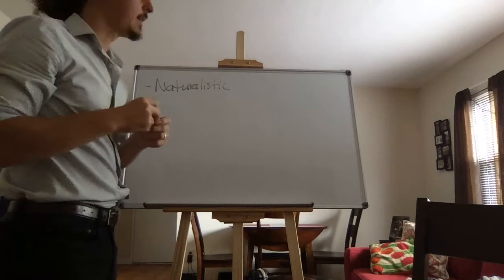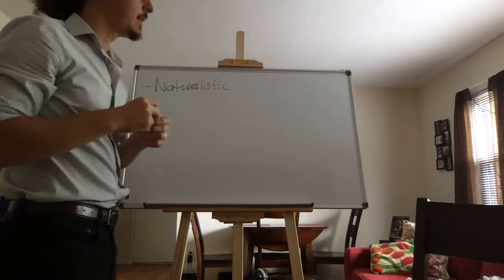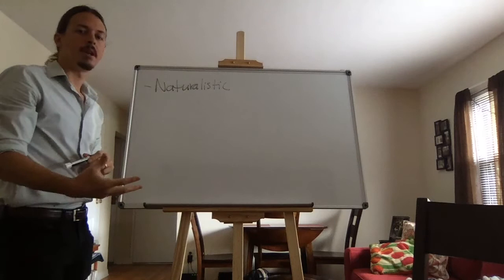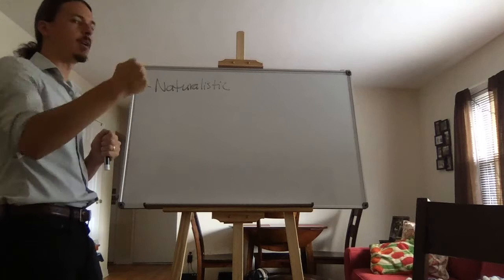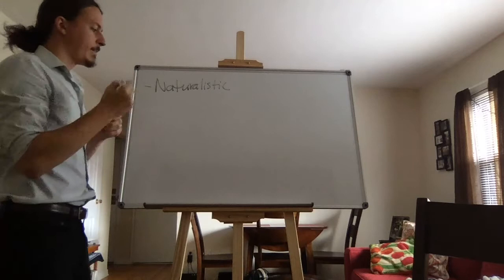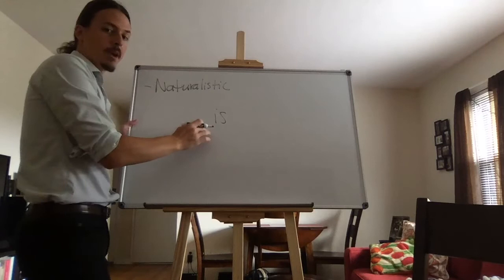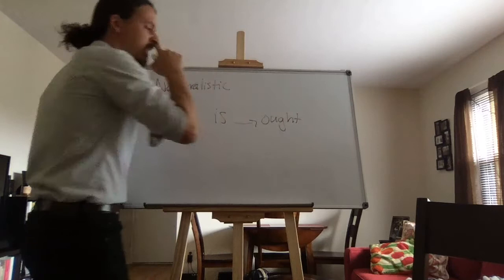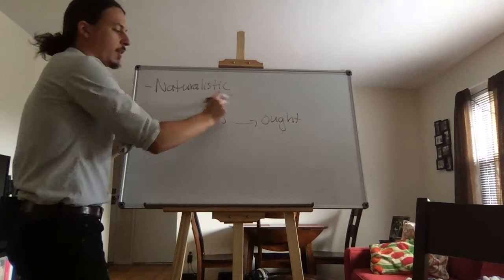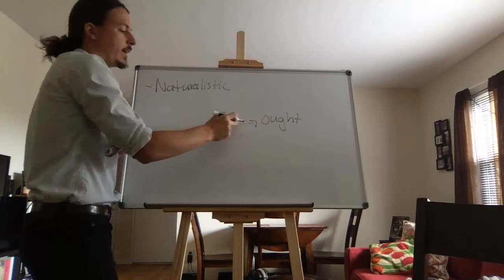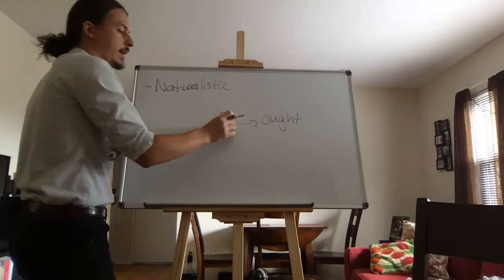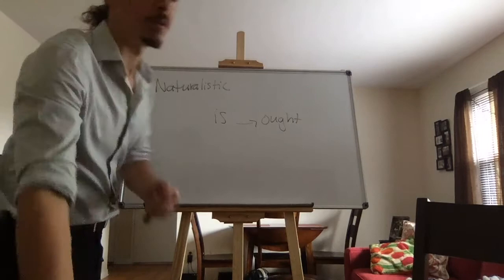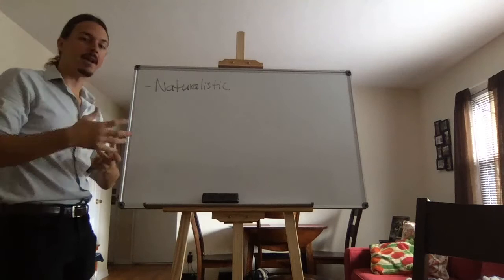What does naturalistic mean? It means that his ethical system is derived from nature — he's trying to create an ethical framework that naturally comes from the natural order of things. Aristotle claims we can derive an 'ought' or a 'should' out of facts regarding what is. Ethics is about what should be the case, whereas reality is what is the case. His naturalistic ethics tries to derive a 'should' from what 'is,' giving us objectivity.